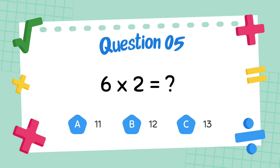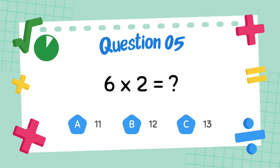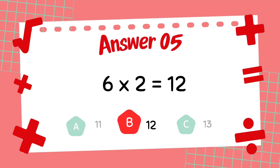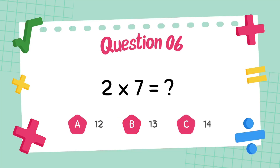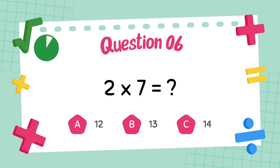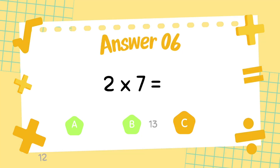What is 6 multiply 2? The answer is 12. What is 2 multiply 7? The answer is 14.